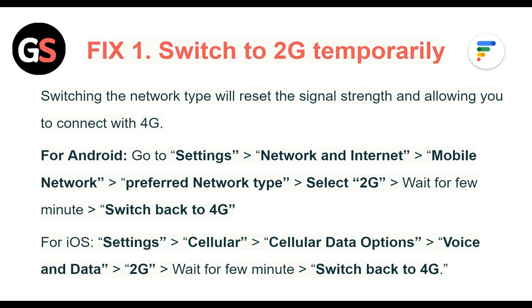For iOS, go to Settings, then Cellular Data Options, then Voice and Data, then 2G. Wait for a few minutes and switch back to 4G.